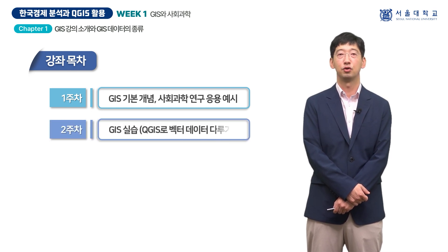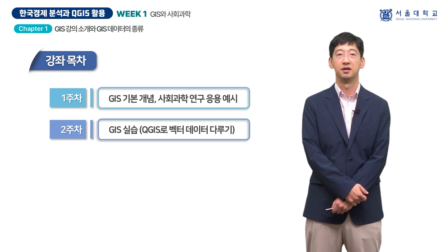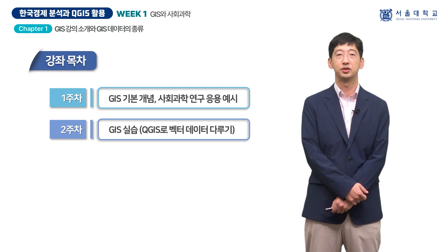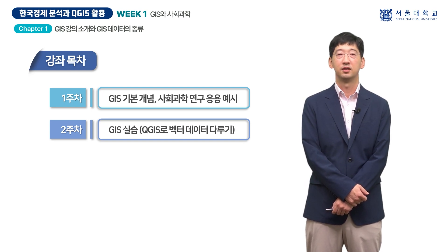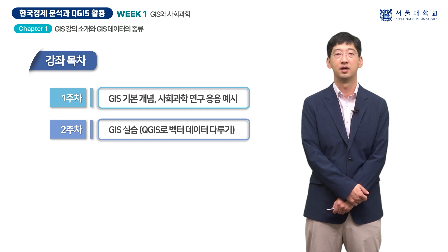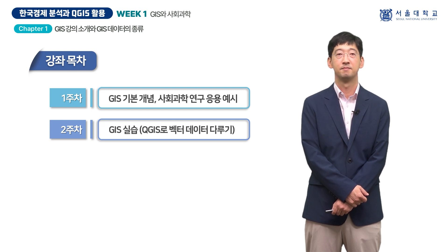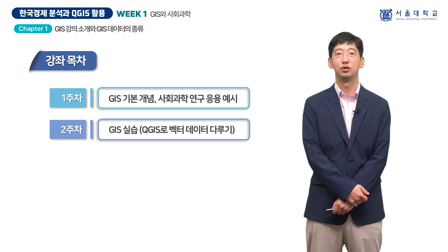2주차 강의에서는 본격적으로 GIS 실습이 진행되는데, 우선 GIS 초보자가 쉽게 쓸 수 있는 QGIS라는 프로그램을 설치하고, 가장 쉽게 쓸 수 있는 벡터 데이터를 불러와 데이터의 정보를 확인하는 기초 단계를 설명합니다. 벡터 데이터는 위치 정보가 담긴 점들로 이루어진 자료로 생각하시면 됩니다.